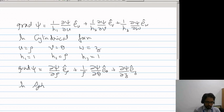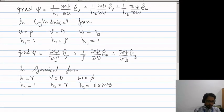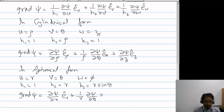In the spherical form, u will be r, v will be theta, w is phi, h1 is 1, h2 is r and h3 is r sin theta. So, grad psi in the spherical coordinates would be ∂psi/∂r e_r plus 1/r ∂psi/∂theta e_theta plus 1/(r sin theta) ∂psi/∂phi e_phi.